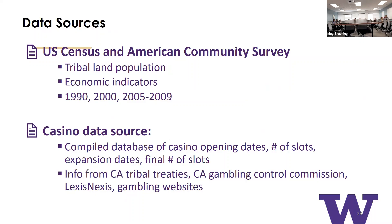We use data from the U.S. Census and American Community Survey for population numbers and economic indicators. For the source of casino data, we had to build this ourselves through document reviews — examining all treaties between every tribe in California and the state, giving us information about who had a casino in 1999 and how many slots. We then used LexisNexis to search newspaper articles about openings and expansions, and also used gambling websites, which report slot machine counts for each casino.